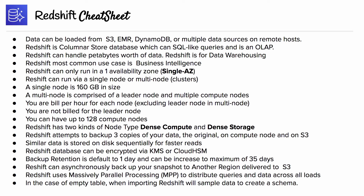Redshift databases can be encrypted via KMS or CloudHSM. Backup retention defaults to one day and can be increased to a maximum of 35 days. Redshift can asynchronously back up via snapshot to another region, delivered via S3. Redshift uses massively parallel processing to distribute queries and data across all nodes.